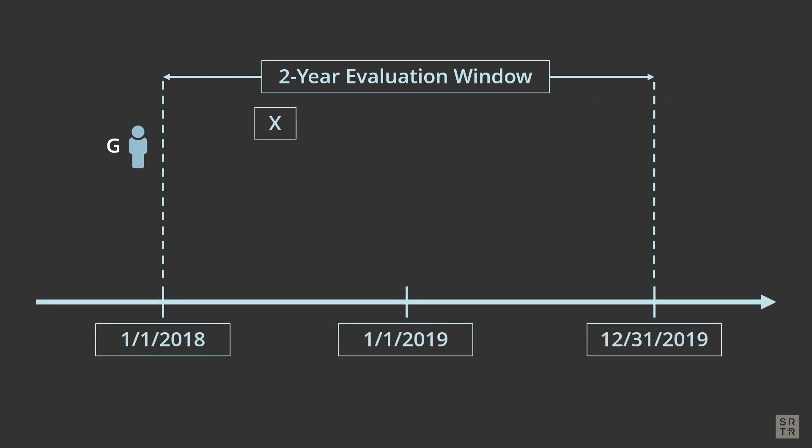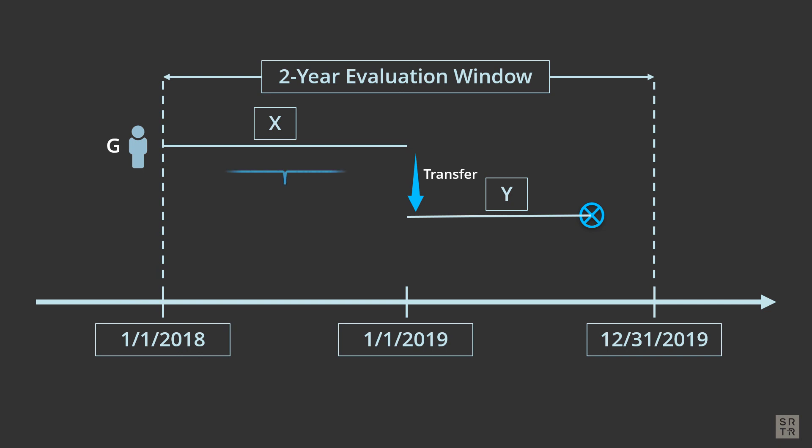Patient G transferred from Program X to Program Y and died after transfer. In SRTR metrics, Patient G's person time for Program X begins at listing and ends at transfer. For Program Y, Patient G's person time begins at listing and ends at death. The death counts towards Program Y's data, not Program X's data.